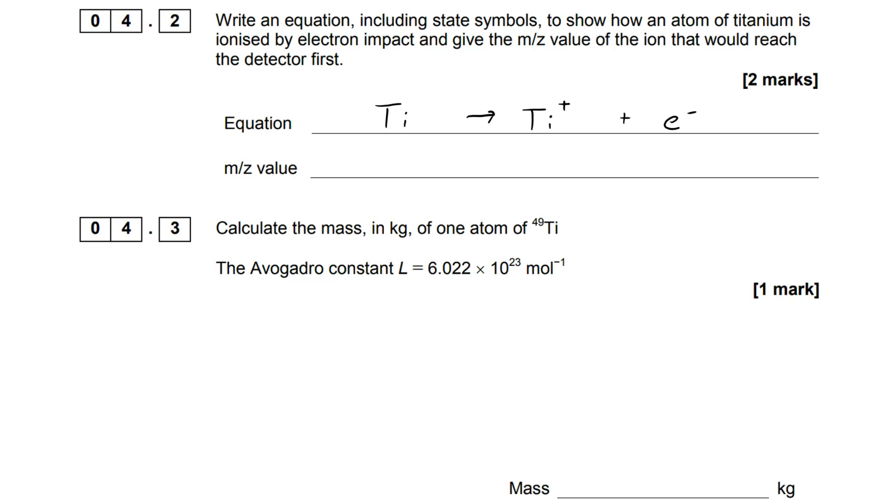We know we're firing high energy electrons at it and they are knocking electrons off the outside of the titanium atom—one electron per atom in the vast majority of cases. I haven't got the mark here yet though because I must include the state symbols.